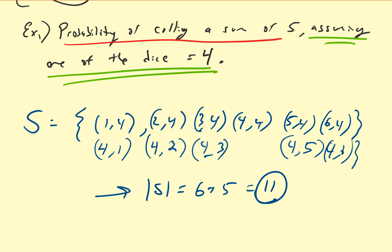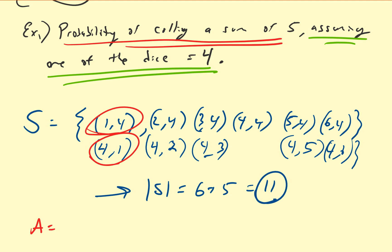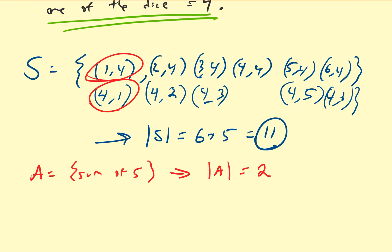What's the probability of rolling a sum of 5? Rolling a sum of 5 can be (1,4) or (4,1). Let's check the others: 2+4=6, 3+4=7, 4+4=8, 5+4=9, 6+4=10 — none of those give 5. So if we call event A to be rolling a sum of 5, the size of A is equal to 2. Therefore, the probability of A assuming the reduced sample space S has already occurred is 2 divided by 11, which is approximately 0.1818.